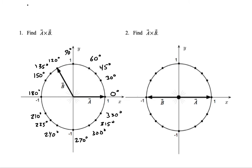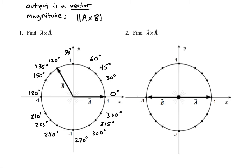We need a vector, but we can find the magnitude fairly easily with a simple formula. The magnitude of A cross B is given by AB sine of theta. Whereas the dot product was AB cos theta and took into account how parallel the vectors were — the more parallel, the more positive the dot product — the cross product takes into account how perpendicular the vectors are. The more perpendicular they are, the larger the cross product magnitude will be.